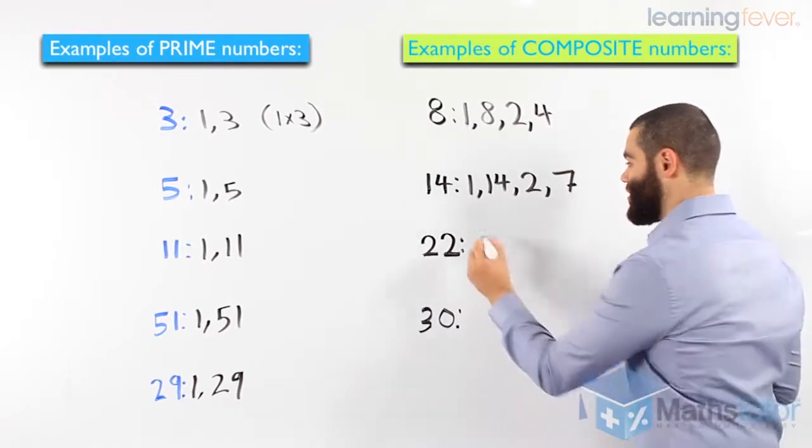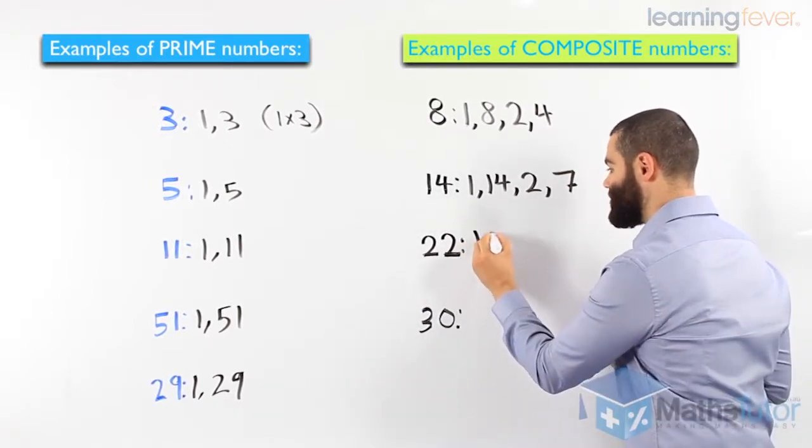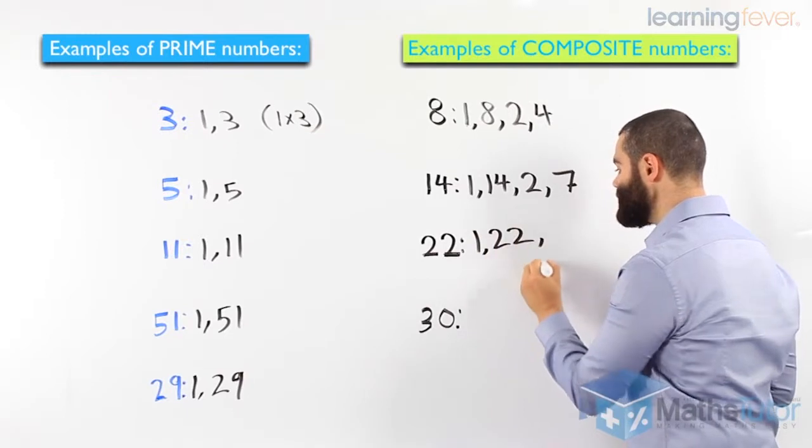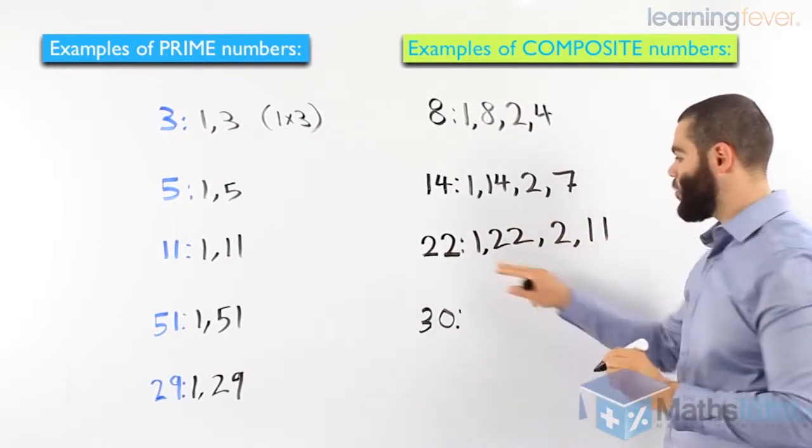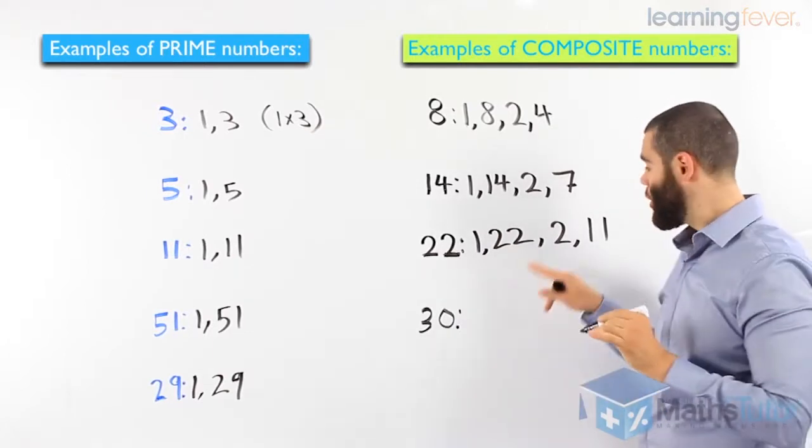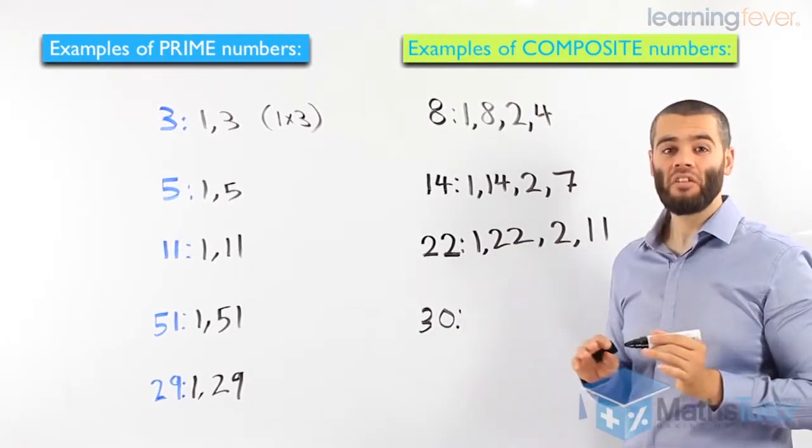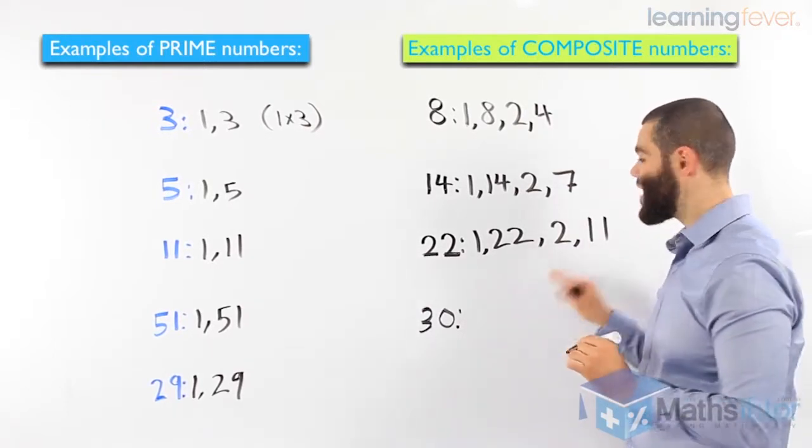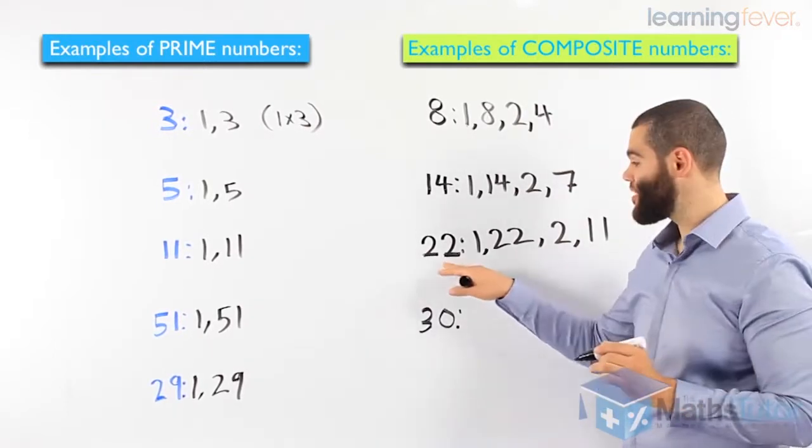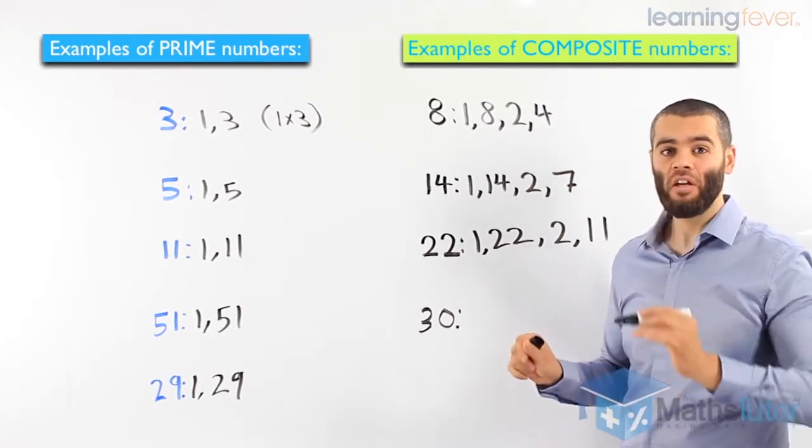22. 1 times 22. And 2 times 11. 1 times 22 make 22. 2 times 11 is 22. As you can see, more than 2 factors. That means we have a composite number. 22 is a composite number.